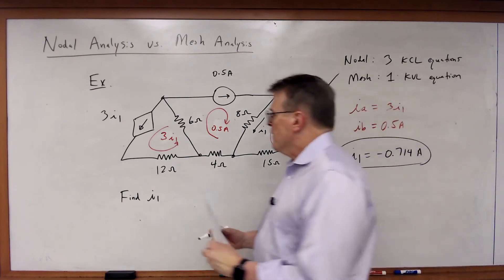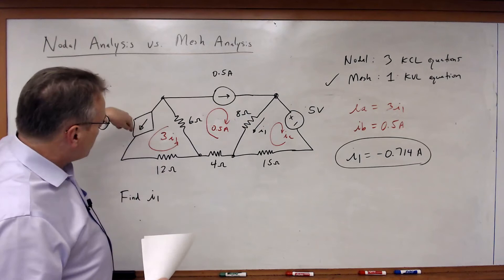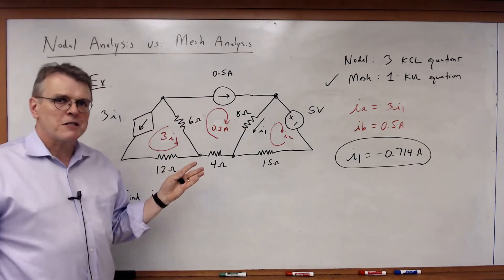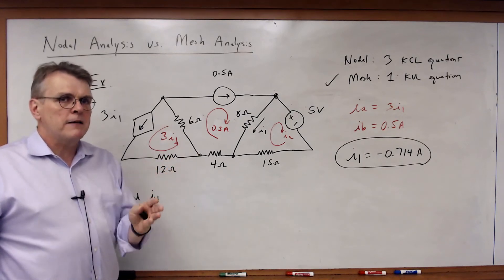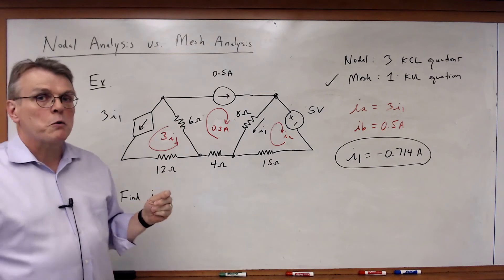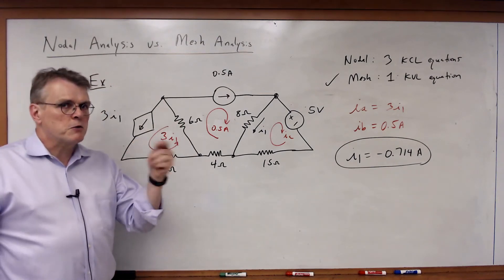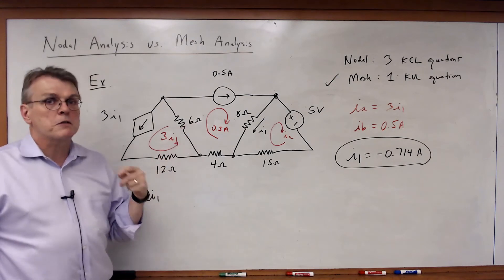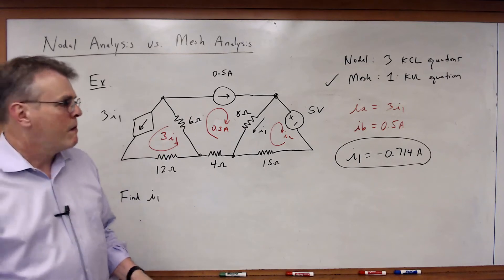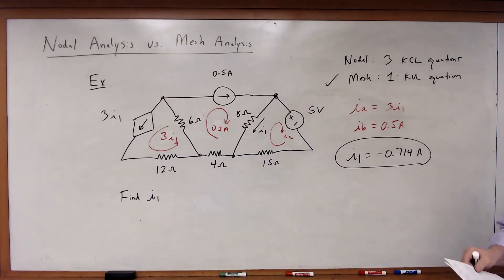Now note here, when I work this problem, we have lots of current sources. In general, a circuit with lots of current sources is a circuit that will probably lend itself to mesh analysis because current sources constrain mesh currents. So voltage sources constrain node voltages, current sources constrain mesh currents, and in either case, you're going to make the problem simpler. So in this case, mesh is the way to go.